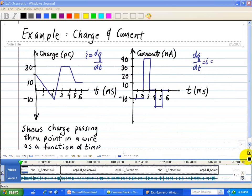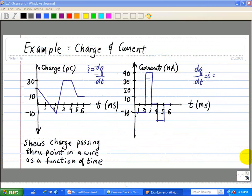So here we have an example, a chart, where we're going to show the relationship between charge and current. In the graph on the left, we have a chart showing charge passing through a point in a wire as a function of time. And we want to find the current at various points of this graph.